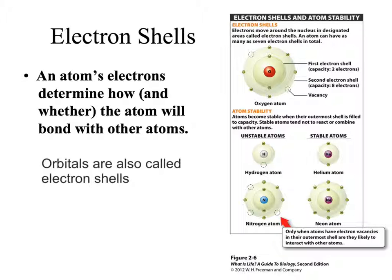Each shell can only hold a certain number of electrons. For example, the first shell around the nucleus of an atom can only hold 2 electrons. The next shells, so shell 2 through 7, can hold 8 electrons.